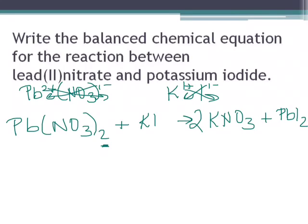We have one potassium on our reactant side, and because we put that two in front of the KNO3, we now have two potassiums. Let's put a two there, and that also balances out our iodines, giving us two iodines on the reactant side and two on the product side. That equation is balanced.